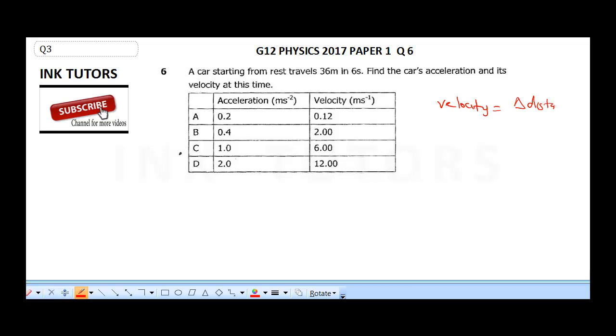Velocity is change in distance over time, which is going to be equal to 36 over 6, which will give us 6 meters per second. So this is our velocity.